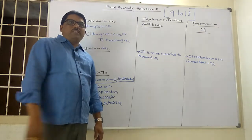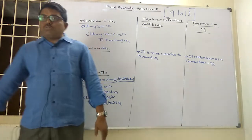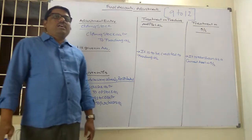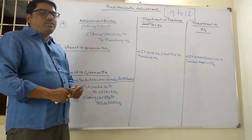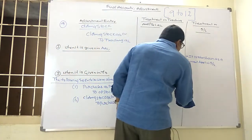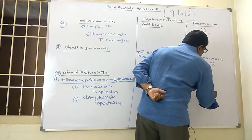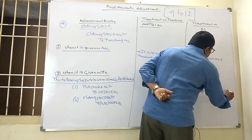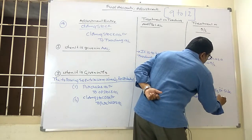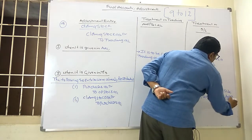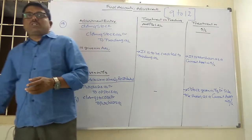When closing stock is given in the trial balance on the debit side, it is to be shown only as a current asset in the balance sheet. There is no need to credit it to the trading account, because the purchase cost has already been reduced. Nothing else needs to be done for closing stock when it appears in the trial balance — just show it as a current asset in the balance sheet.